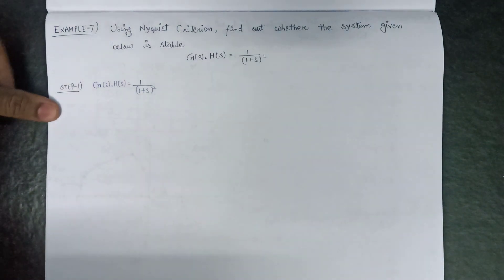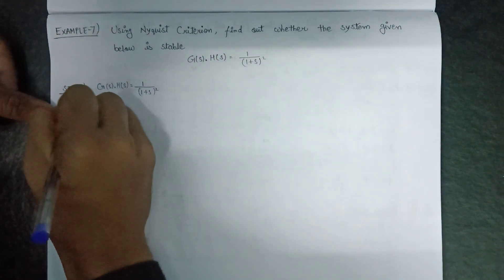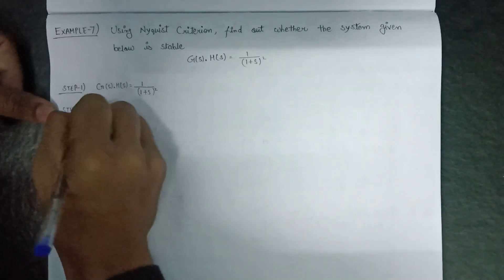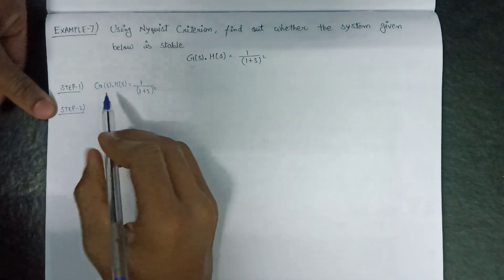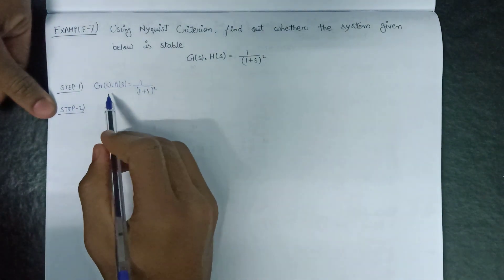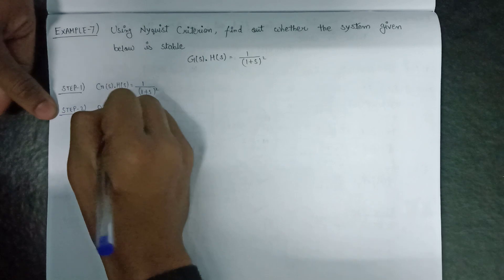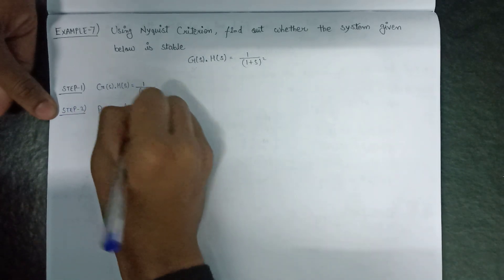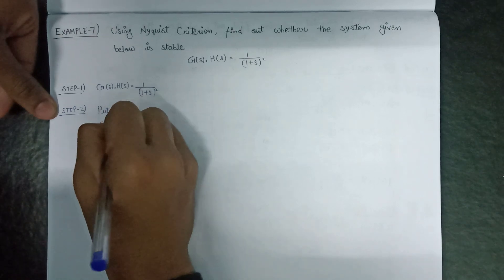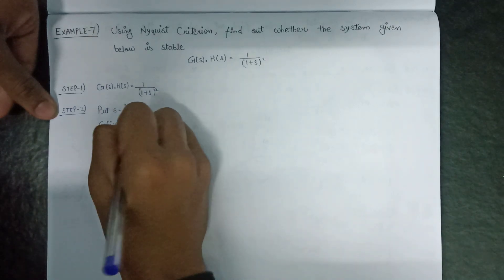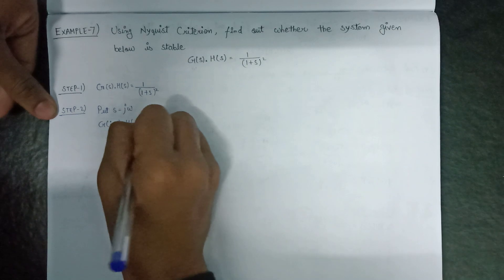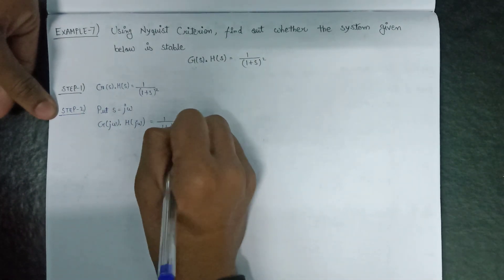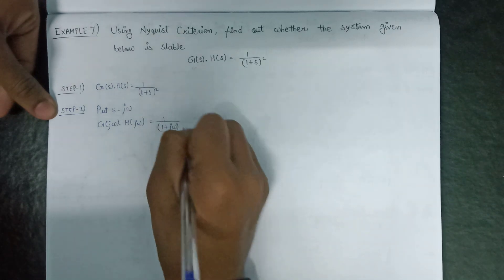Moving on to step number 2: converting this to sinusoidal form in the frequency domain. For this we need to put s = jω. Now G(jω)H(jω) becomes 1 over (1 + jω)^2.